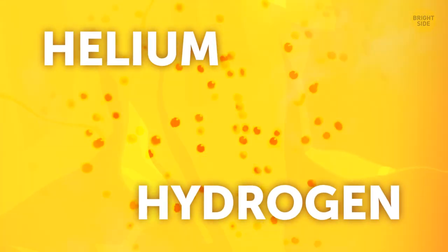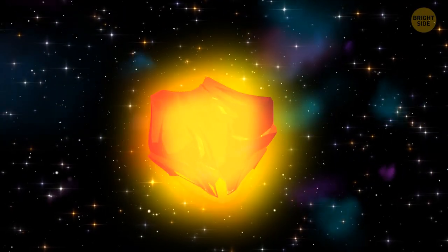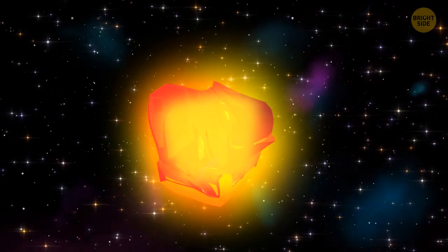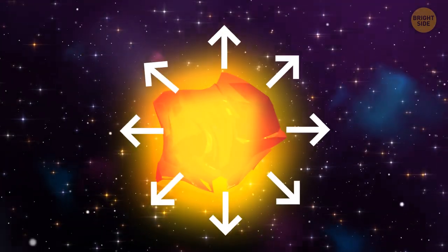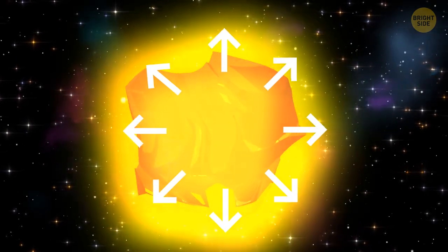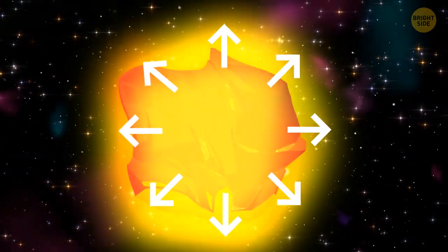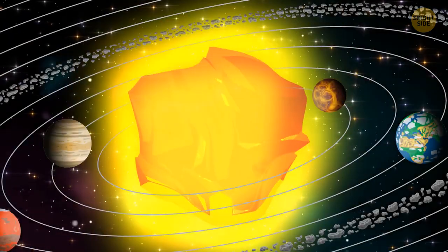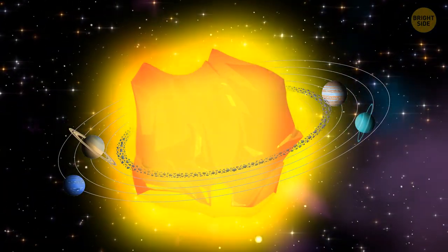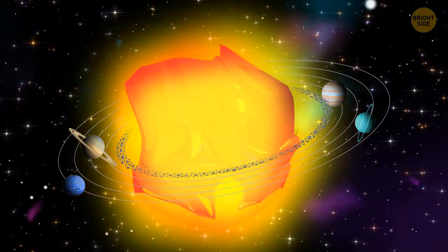But over time, the star runs out of its fuel, helium and hydrogen. That's when heavier elements in the core join the nuclear reaction. When they burn, they release more energy and heat than gravity can hold. And the star starts expanding. That's what's happening to Betelgeuse right now. Now, it's already so big that if you put it in the center of our solar system, its edge would touch the asteroid belt between Mars and Jupiter.